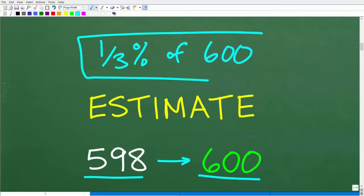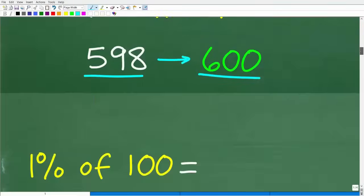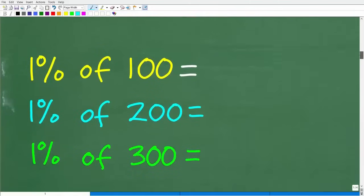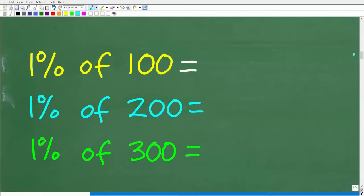All right. Now, if you were thinking in these terms to do this problem using mental math and you're like, I'm going to round this 598 to 600, that is fantastic. So now what we have to talk about is the strategies to find the percent of a number just using our brain.